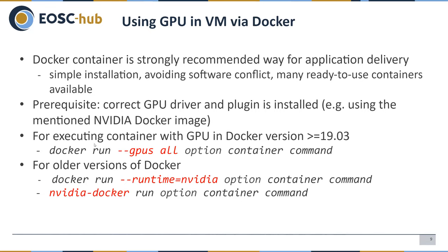To run a container with GPU, you execute docker run and just add the option --gpus all. All the other options are optional. If you look at older versions of Docker you might see different syntax like nvidia-docker run, but now the correct syntax is docker run --gpus all.